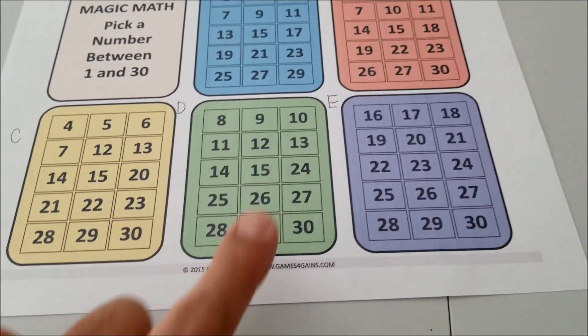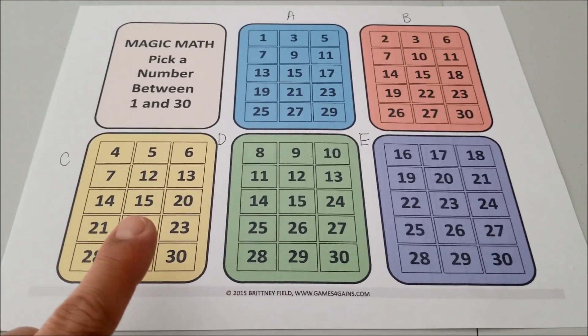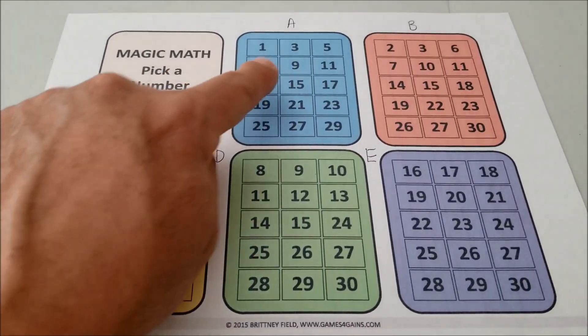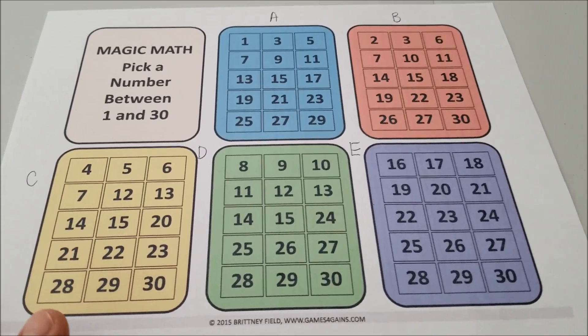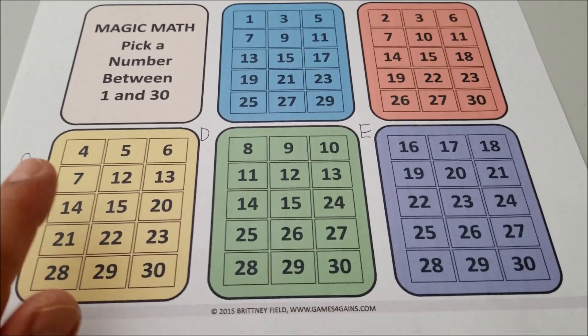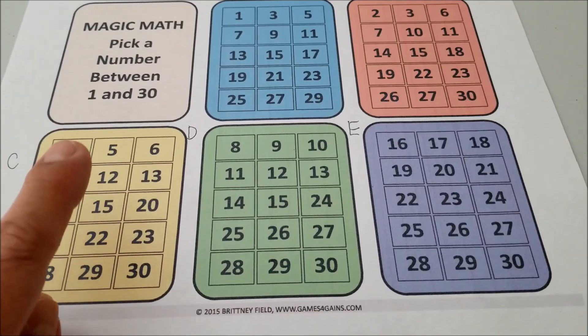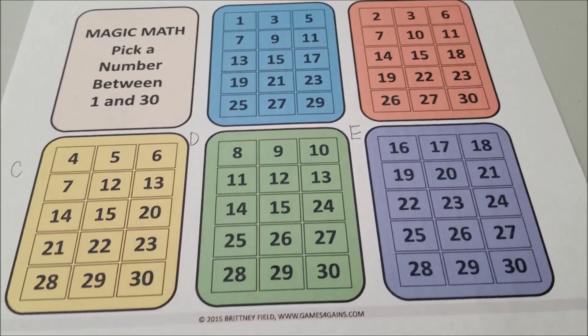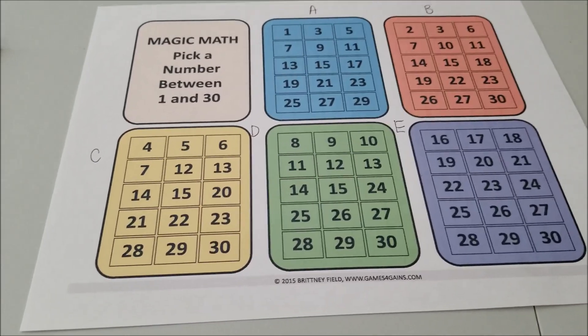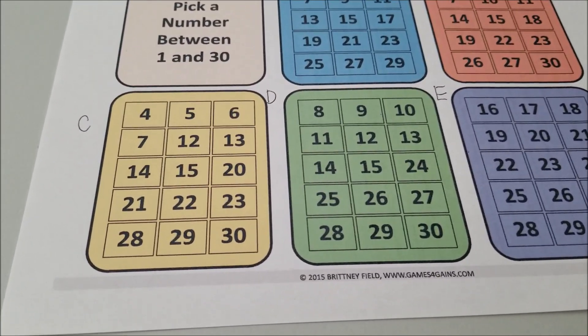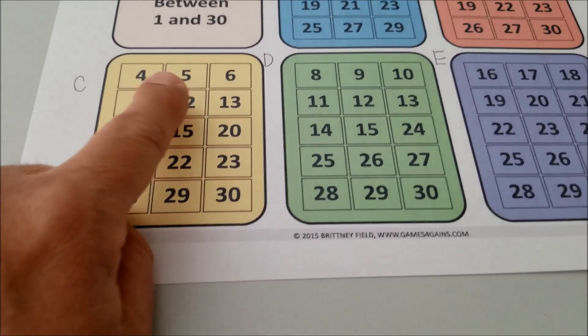So basically, here's what the person would say. Hey, what number or which boxes is your favorite number in? So if Mr. Hino was the one answering this magic trick, I'd say, well, my number is in boxes C and D. And the trick would be for the person to go, okay, it's in boxes C and D. Your favorite number must be 12, which it is.